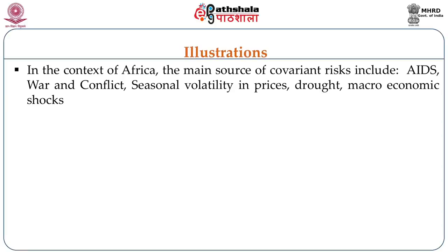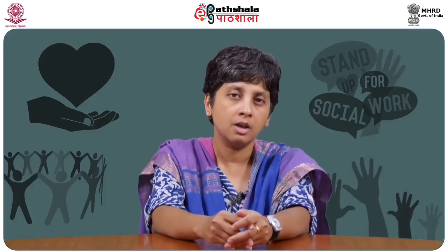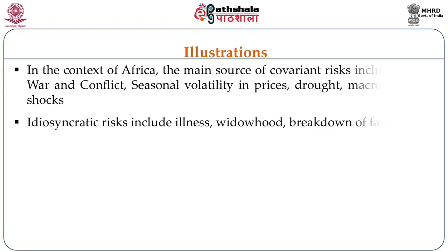For example, in the context of Africa, the main sources of covariant risk include HIV/AIDS, armed conflict, seasonal variability of incomes, volatility of food prices, drought, and other types of macroeconomic shocks. These are types of shocks which affect large numbers of people, and it is impossible for individuals to deal with them based on informal networks of support alone.